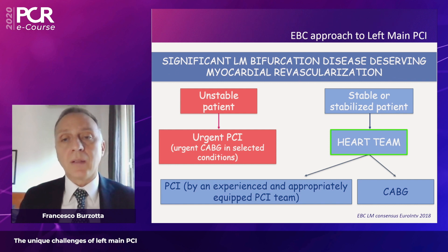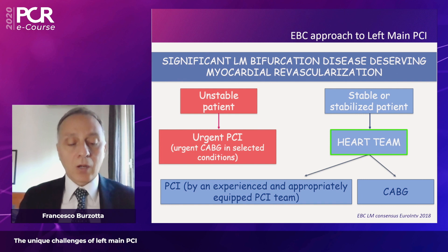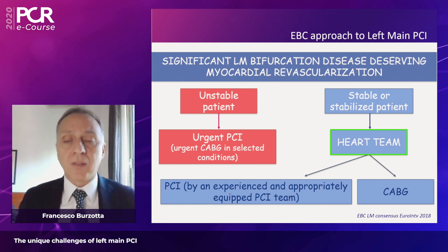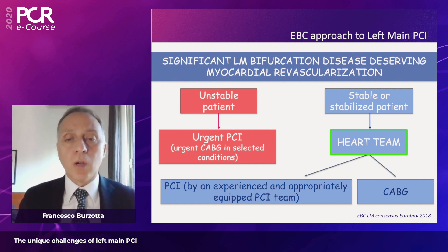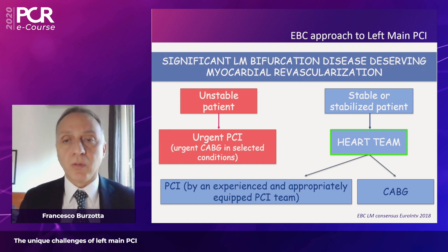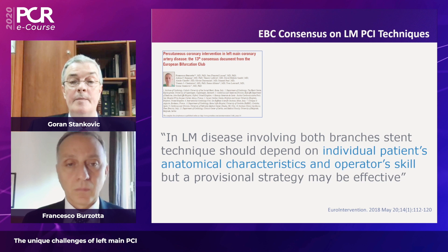Putting this into the context of clinical practice, a conservative and tailored approach is warranted. In unstable patients, coronary surgery is often not a good option and urgent PCI is preferred. For stable or stabilized patients, it is important to remember that all data supporting PCI have been obtained on top of heart team discussion. A team approach must be offered, presenting both CABG and PCI options tailored for the patient. When PCI is selected, it is critical to have an experienced and appropriately equipped PCI team, as technique is always important in this type of procedure.